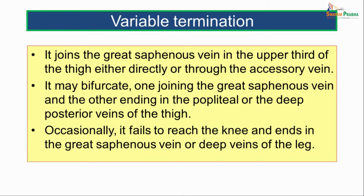The small saphenous vein at times has a variable termination. It may join the great saphenous vein in the upper third of the thigh either directly or through the accessory saphenous vein. It may bifurcate, one branch joining the great saphenous vein and the other ending in the popliteal or the deep posterior veins of the thigh. Occasionally, it fails to reach the knee and ends in the great saphenous vein or in the deep veins of the leg.